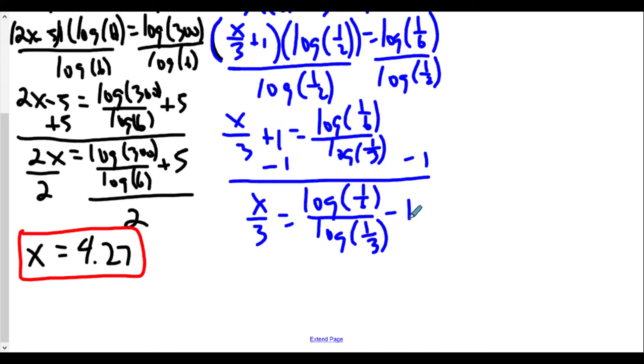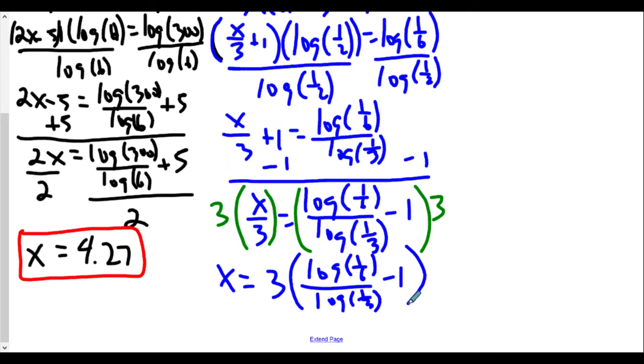So now we have x/3+1 equals log of 1/6 divided by log of 1/2. We're going to subtract 1 from both sides. This is getting a little more complicated, that's okay. Log of 1/6 over log of 1/2 minus 1. And then we're going to multiply everything by 3. Because we have x divided by 3, to get x by itself, multiply everything by 3. So we will get x is equal to 3 times the log of 1/6 divided by log of 1/2 minus 1, close parenthesis.